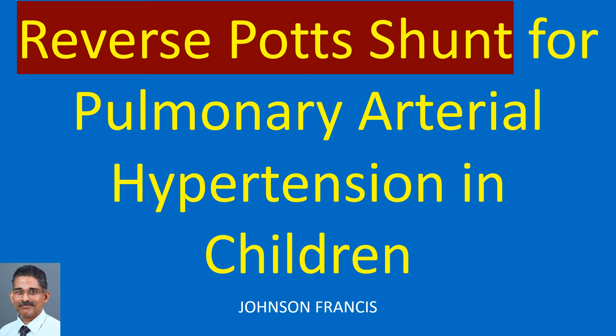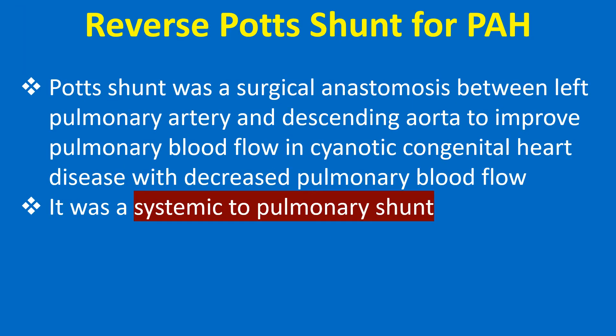Reverse Potts shunt can be considered as a renaissance of the discontinued Potts shunt for cyanotic congenital heart disease. Potts shunt was a surgical anastomosis between the left pulmonary artery and descending aorta to improve pulmonary blood flow in cyanotic congenital heart disease with decreased pulmonary blood flow. It was a systemic to pulmonary shunt.